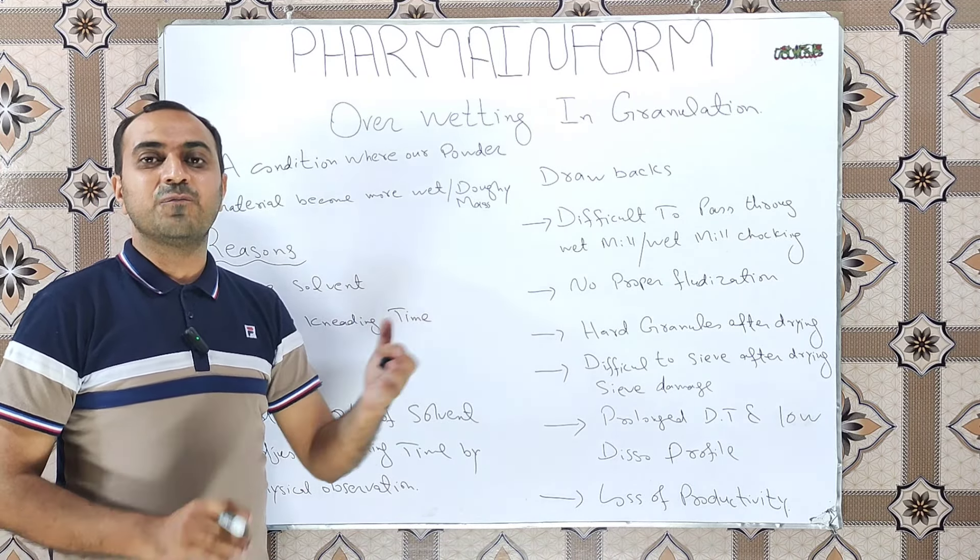In simple words, overwetting is the defect where large lumps or doughy mass is produced during the kneading stage of wet granulation in the rapid mixing granulator, plow mixer, or spiral mixer.